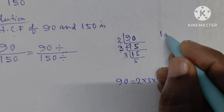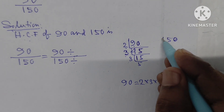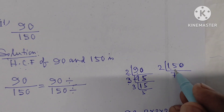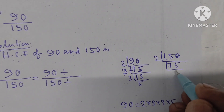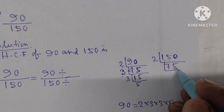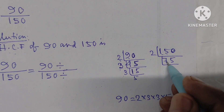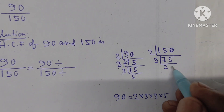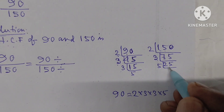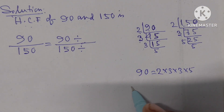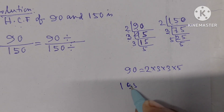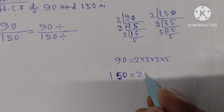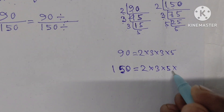Next, for 150: the unit place is 0, so it is divisible by 2. Dividing: 150 ÷ 2 = 75. The unit place of 75 is 5, so it is not divisible by 2. Adding digits: 7 + 5 = 12, which is divisible by 3, so 75 is divisible by 3. Continuing: 150 equals 2 into 3 into 5 into 5.